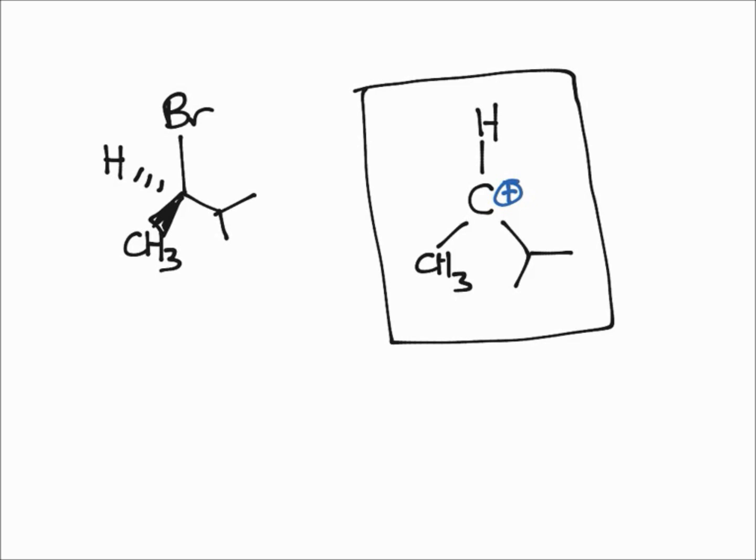That can result in two different configurations, an R and an S. You're going to get a 50-50 mix of this, and this is called a racemic mix, or this reaction proceeds with racemization or scrambling of stereochemistry. Let me show you how that occurs.